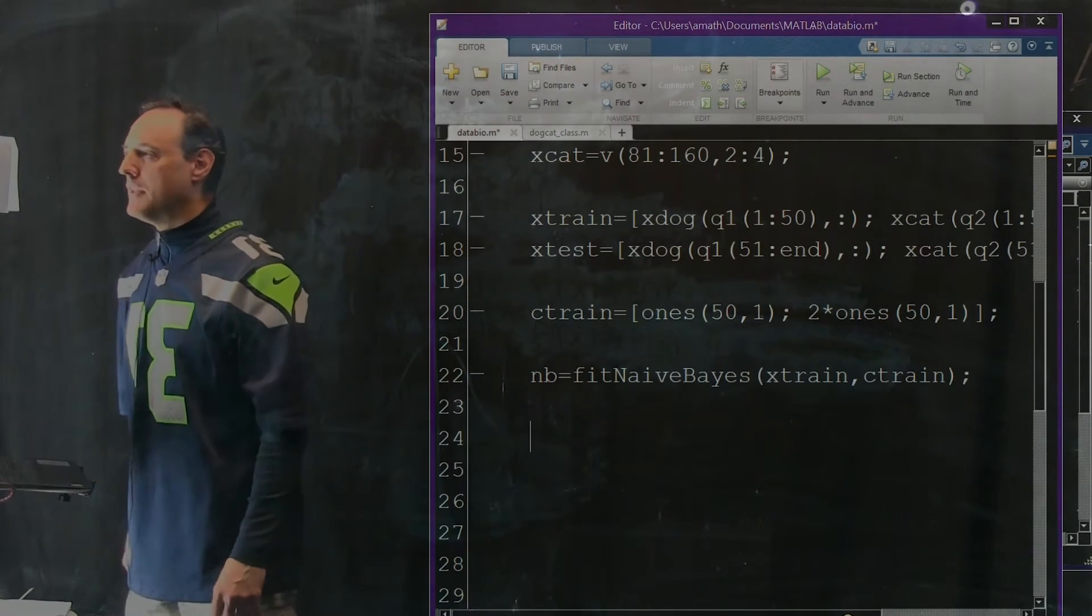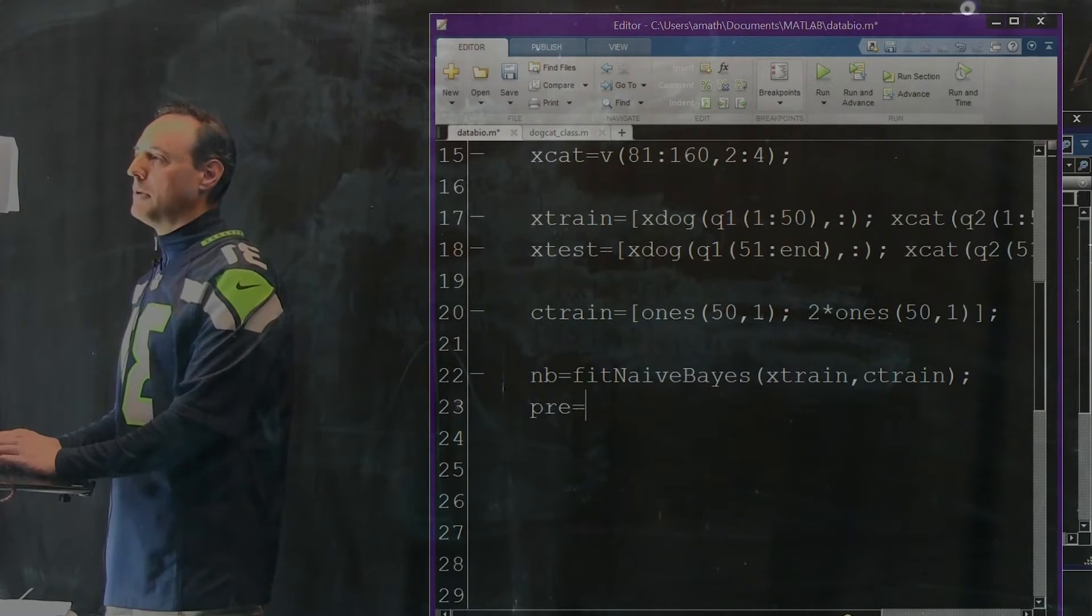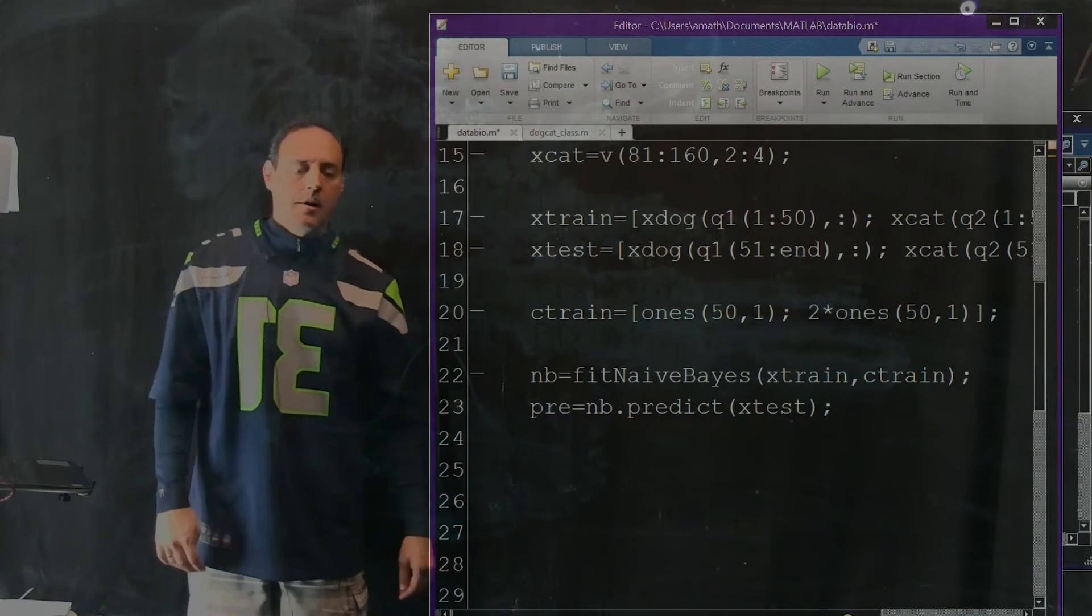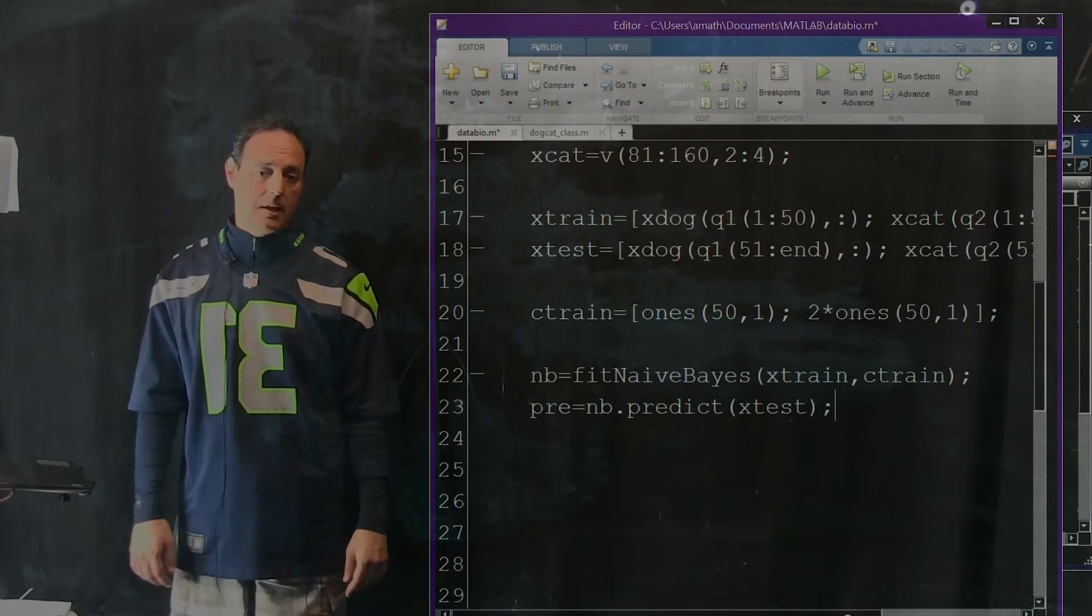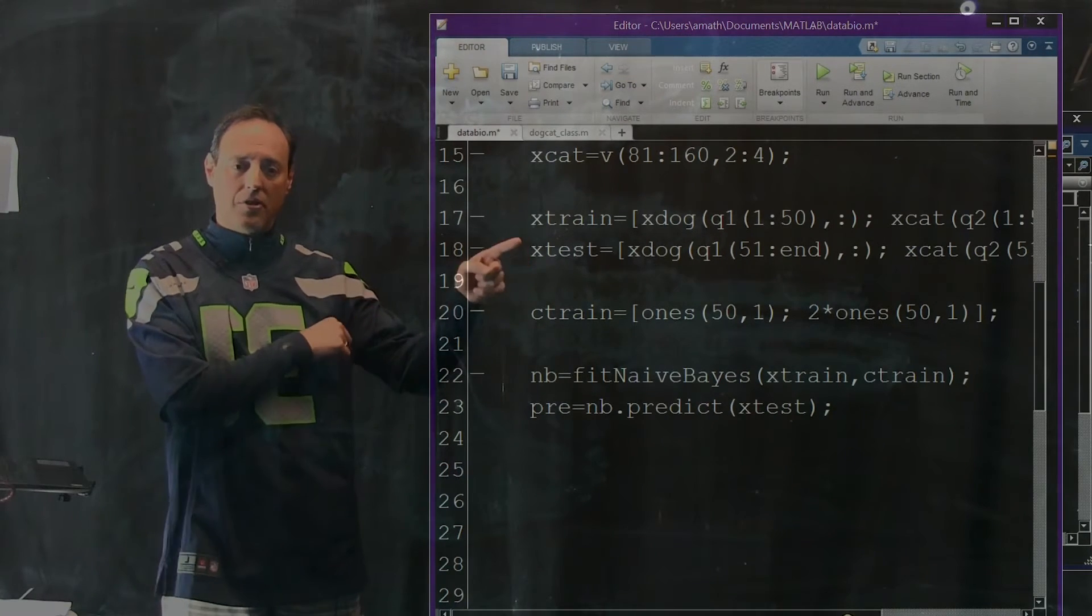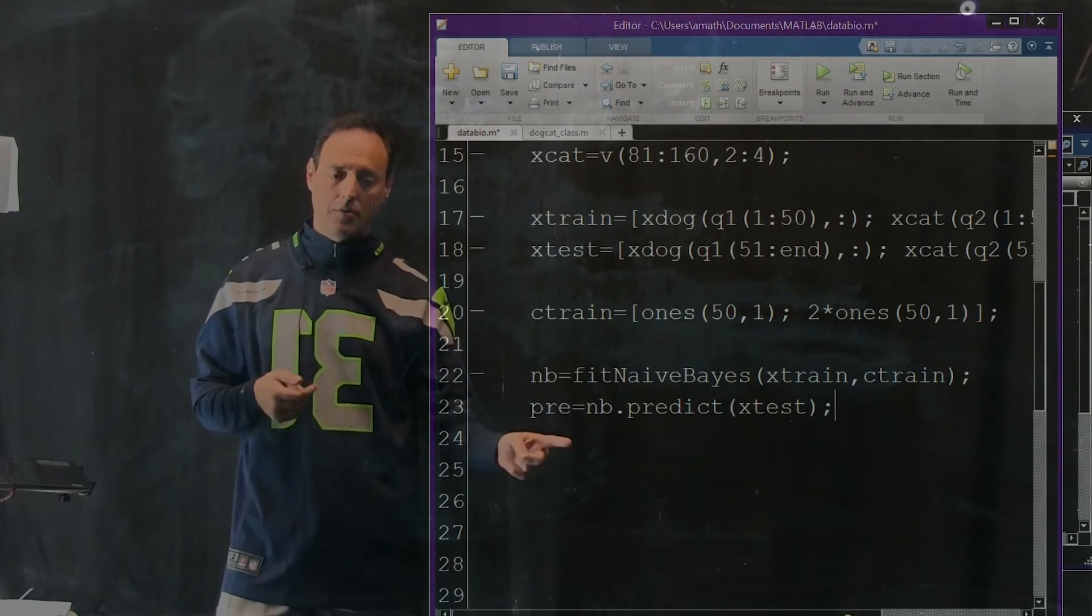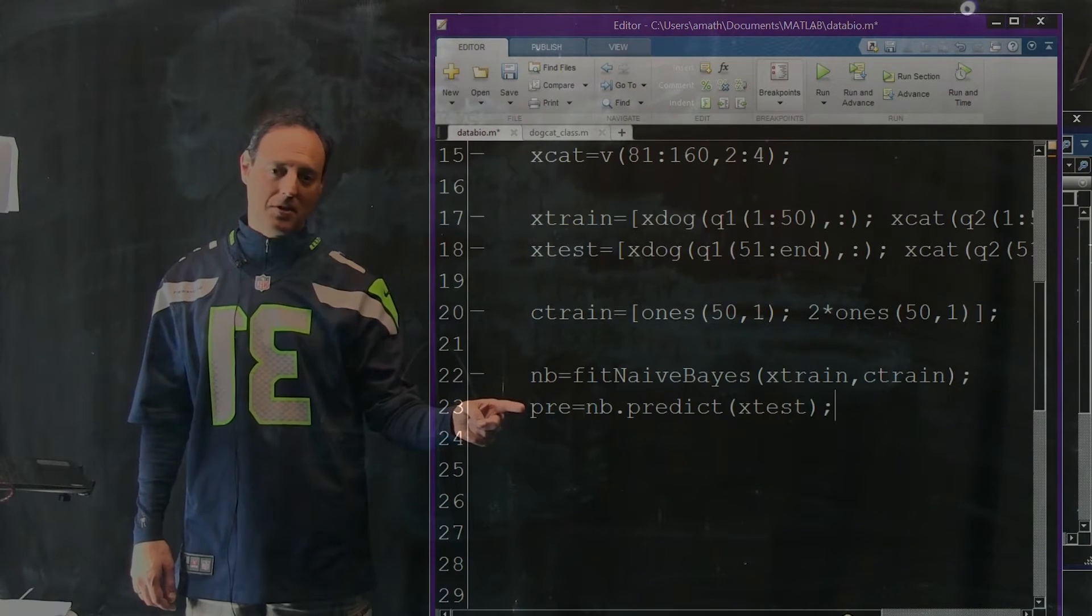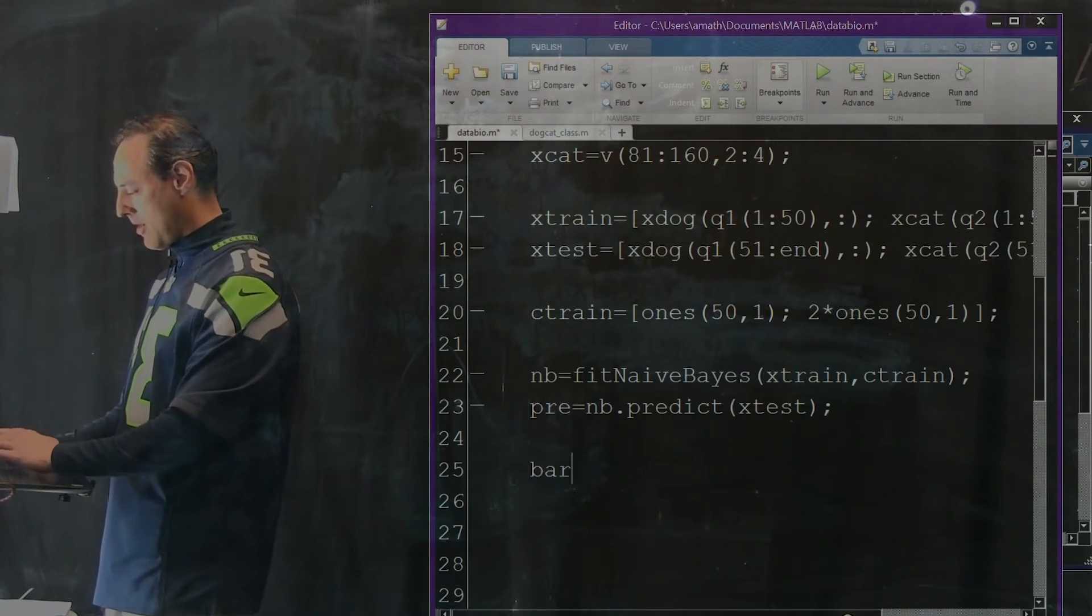So NB comes out and then you can use NB to predict. My prediction is going to be basically NB predict X test. It's going to take this handle NB called a predictor and you just throw your test data in. What's going to come out is a prediction. What it's going to do for every row of that test data, remember we've taken 30 dogs, 30 cats to test it on. So when you throw those 30 dogs, 30 cats at it, it's going to give you back things that are either 1s or 2s because I said they're supposed to be 1s or 2s. Dogs are 1s, cats are 2s. Whatever comes out here as a 1 gets labeled a dog. Whatever comes out as a 2 gets labeled a cat. So we can once again plot a bar of pre.